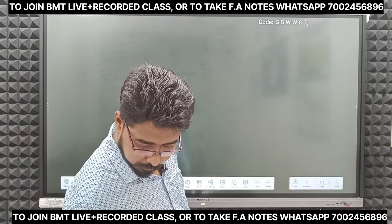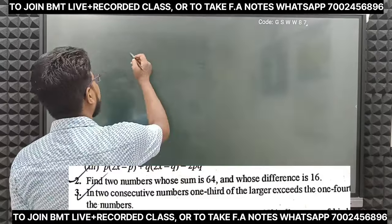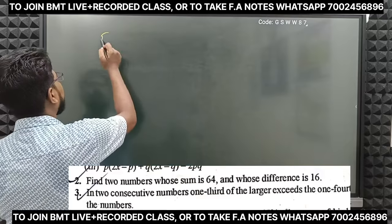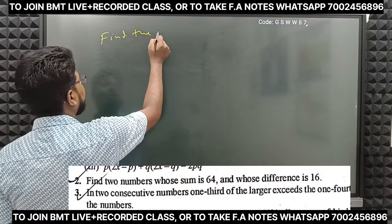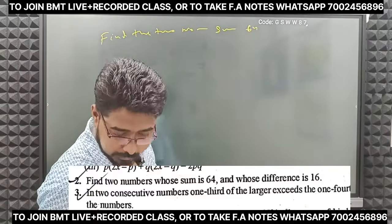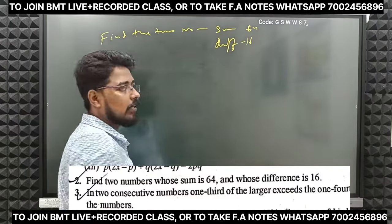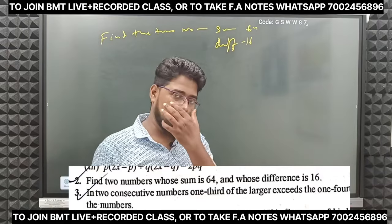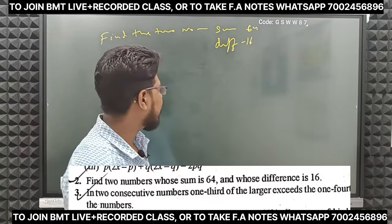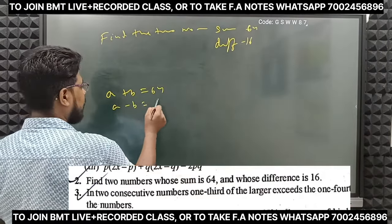Let's go to the first question. Find the two numbers whose sum is 64 and whose difference is 16. You have given two numbers. So we set up two equations: A plus B is equal to 64, and A minus B is equal to 16.